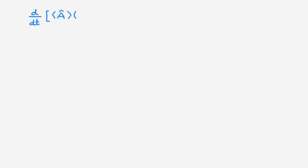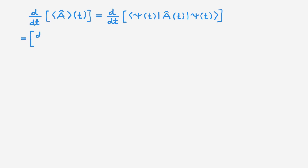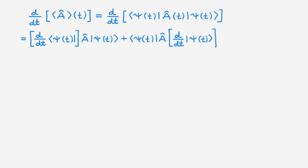We now want to consider the time evolution of the expectation value, so we start by calculating its time derivative. We can explicitly write the expression for the expectation value in terms of the state psi and the observable A, and we can now apply the chain rule to get three terms: the first involves the derivative of the bra, the second involves the derivative of the ket, and the third involves the derivative of the observable. Note that I have omitted the dependence of the operator A on time so that the expressions could fit on the line.